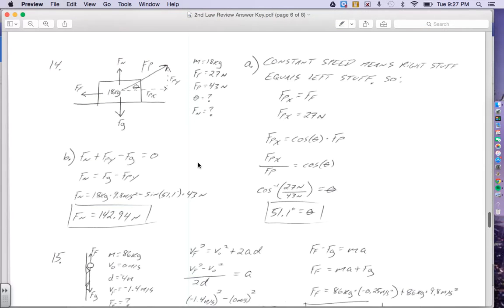First, let's take a look at our picture. Gravity is going to pull down like it always does. Normal force is going up. Friction goes to the left, and we are pulling upward to the right. Here's force of push at an angle. This little symbol here is theta. Since we are pulling at an angle, that means we're pulling somewhat up, that's force of pull on the Y, and somewhat to the right, which is force of pull on the X. Mass is 18 kilograms, friction is 27 newtons, force of pull is 43 newtons, and we're looking for the angle and the normal force.